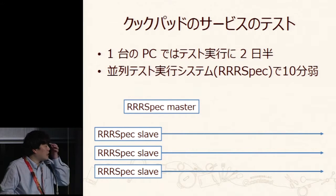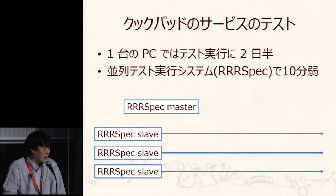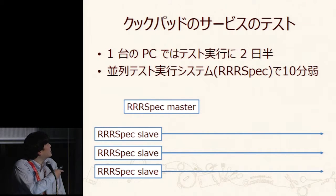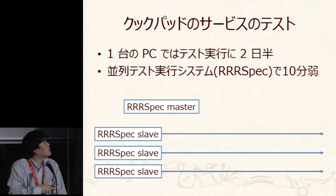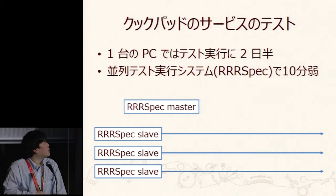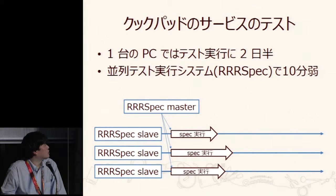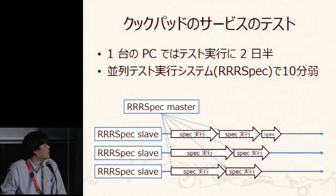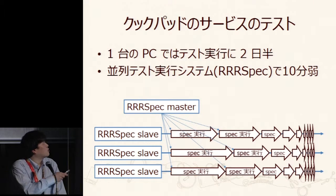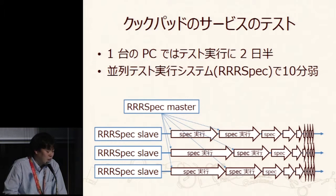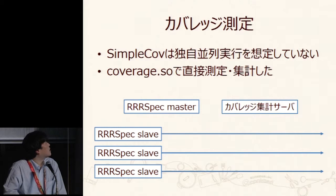At this scale of application, testing is also a major challenge. Running all tests on an ordinary PC took two and a half days. Parallel testing is also done using the open-source parallel_rspec. There is a parallel_rspec master and lots of slaves working under it. Once one test is finished, it moves to another and keeps going. It now takes ten minutes or less.